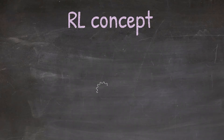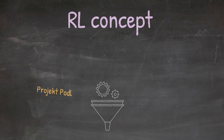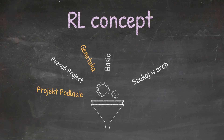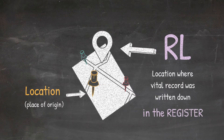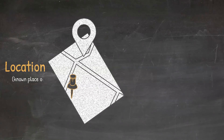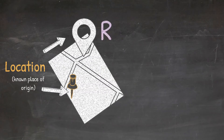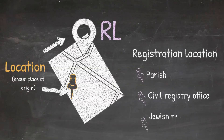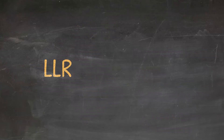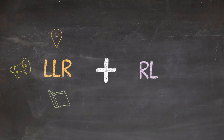Please remember that even if you know the name of the place of origin, it doesn't mean you will be able to find the birth record just by looking for that name in an existing online database or archive collection. To locate the RL, you will have to find out where the vital records from the place of origin were registered. The key to finding a vital record is to understand where the RL is located, because no matter if the ancestor was born in a village or a city, their place of birth will belong administratively to a specific Registration Location — known as the parish, civil registry office, or a Jewish religious community.